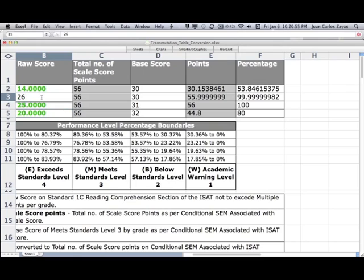By inputting a raw score that is higher than the item count, for 3rd grade for example, which should be 26, if you enter 30, the resulting percentage is higher than 100%, which is of course, no good.